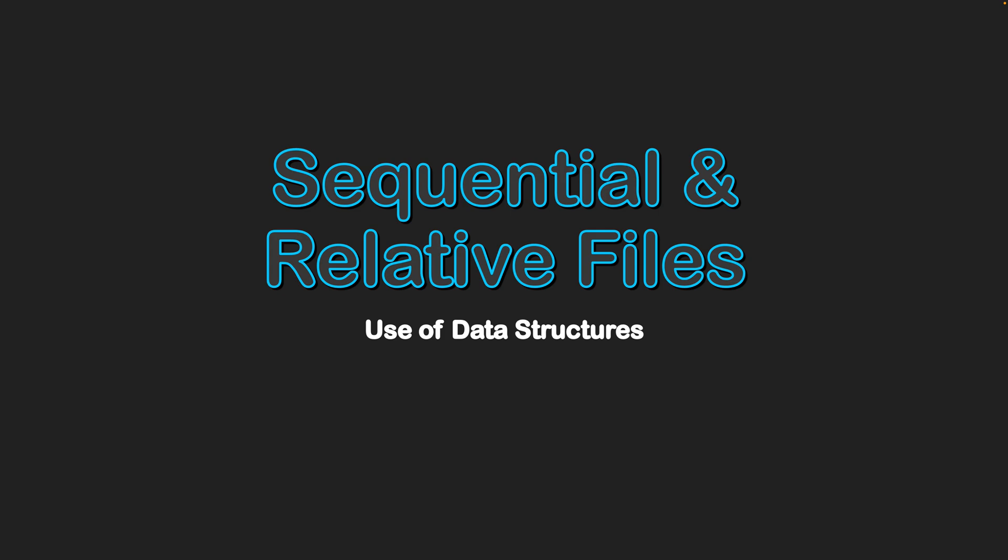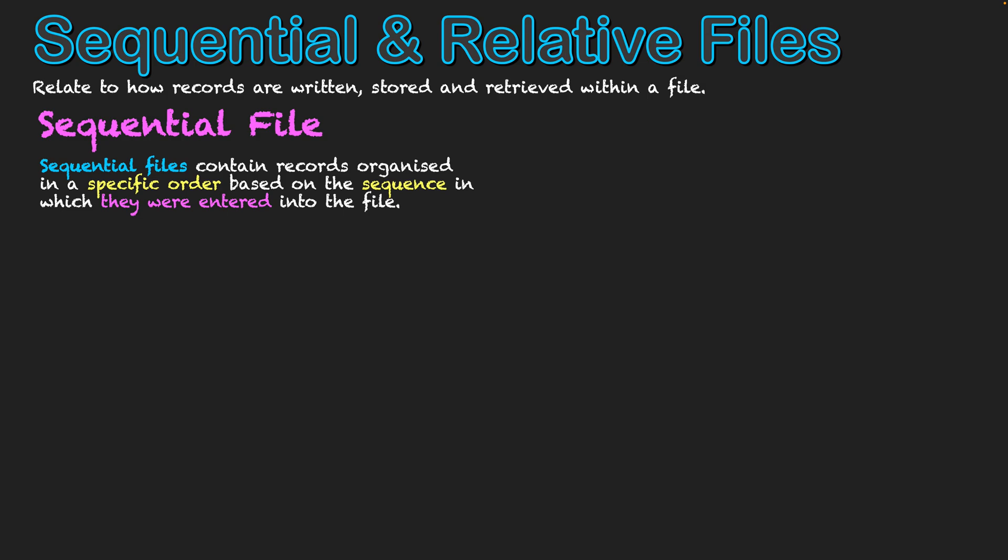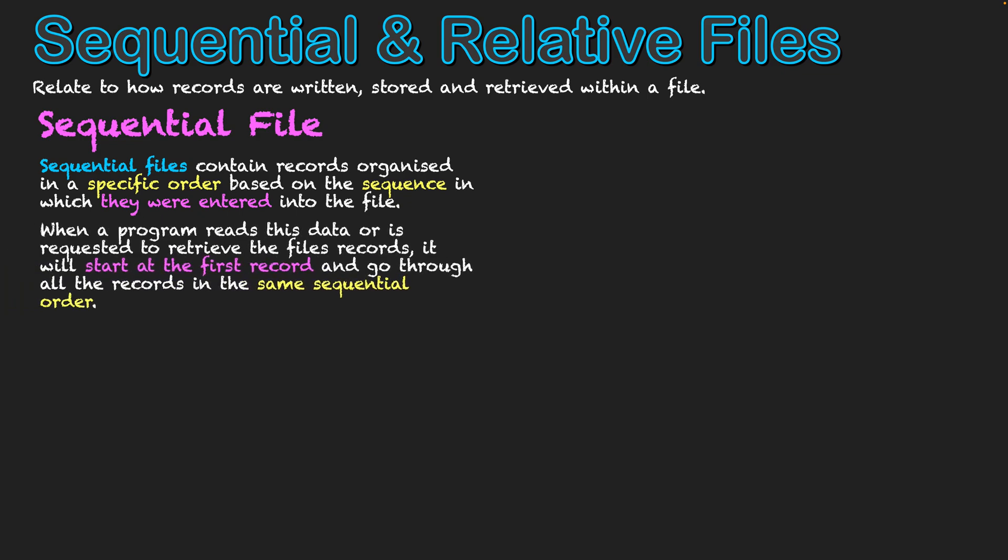Use of data structures: sequential and relative files. These relate to how records are written, stored, and retrieved within a file. A sequential file contains records organized in a specific order based on the sequence they were entered. When a program reads this data and is requested to retrieve specific records, it needs to start at the first record and go through that exact sequence in order to find or use the specific record it needs.